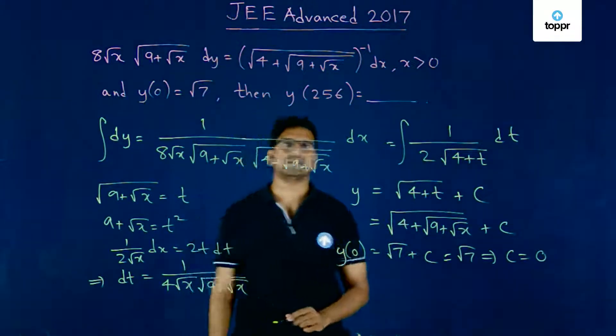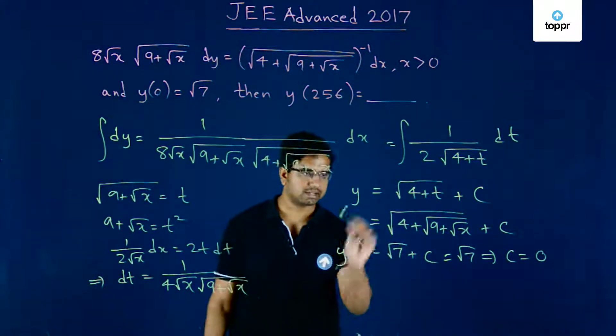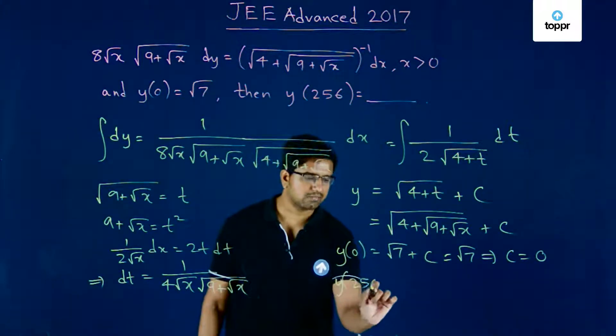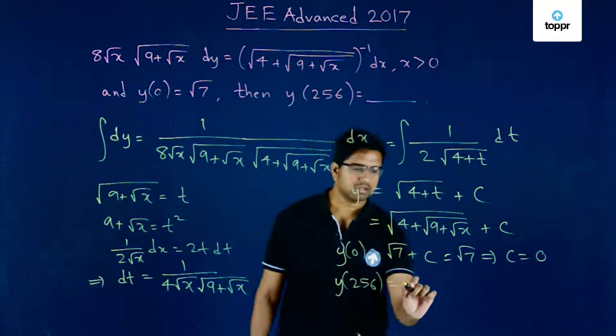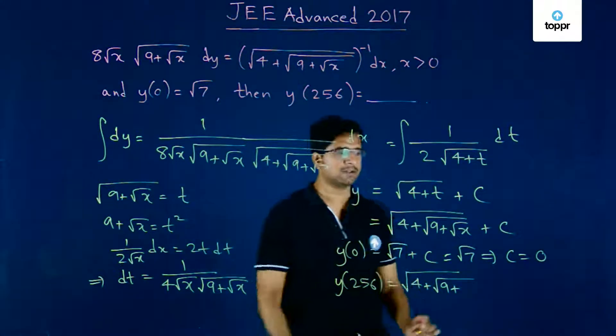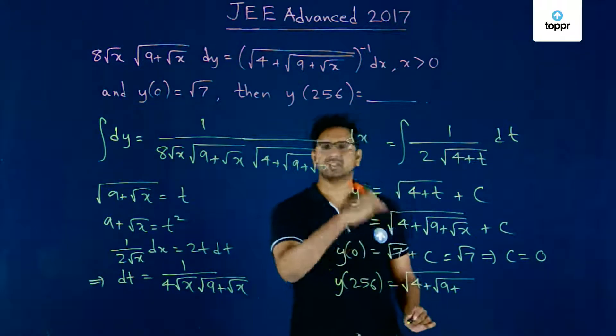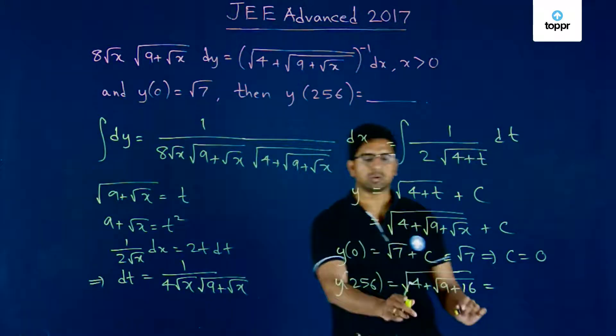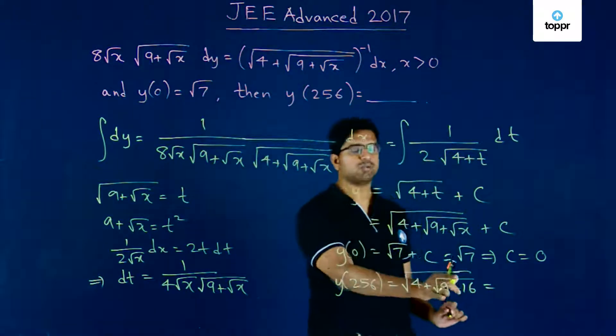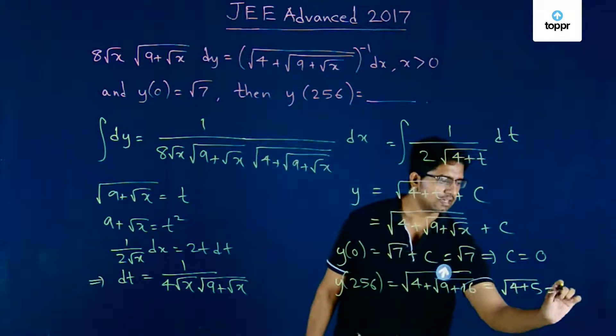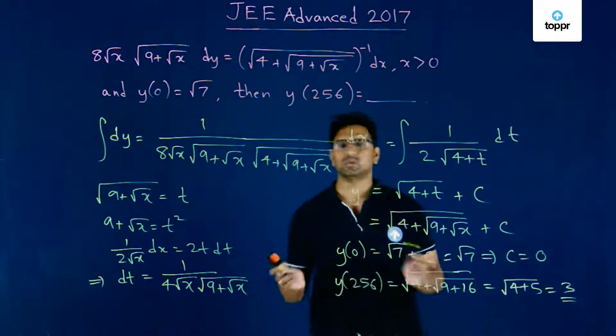Let us find the value at x equals 256. y(256) will be square root of 4 plus square root of 9 plus root 256. Root 256 becomes 16, so this becomes root of 4 plus root 25, which is root of 4 plus 5, which is root 9, and therefore the answer equals 3.